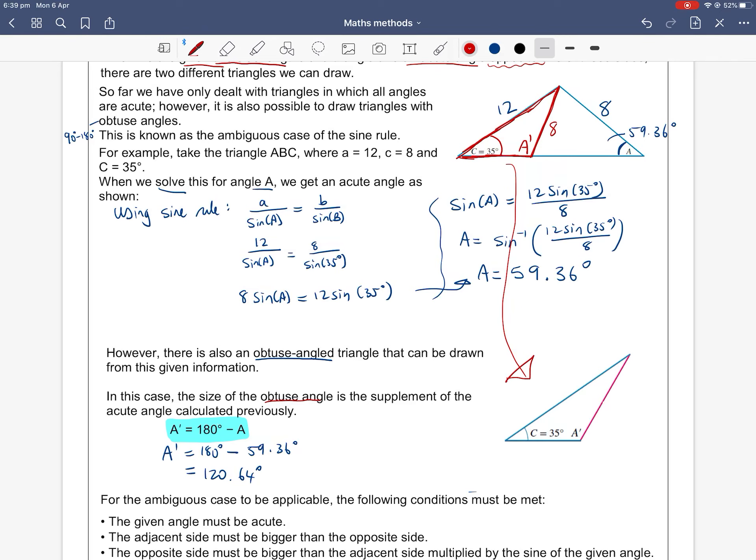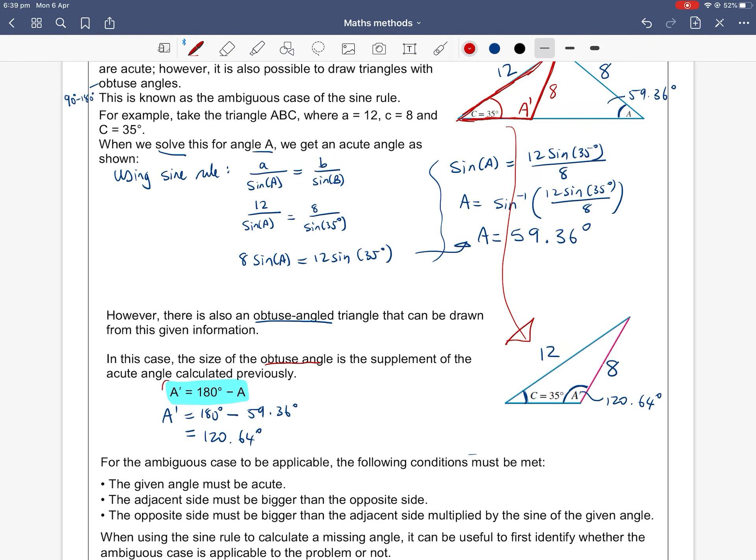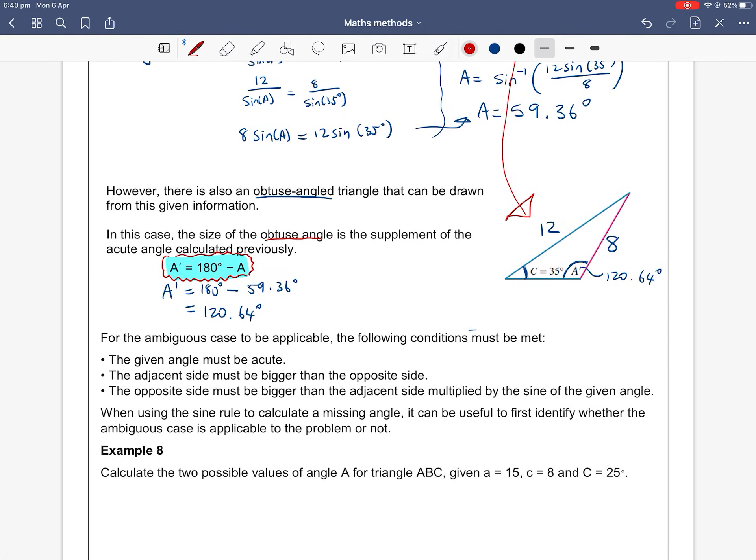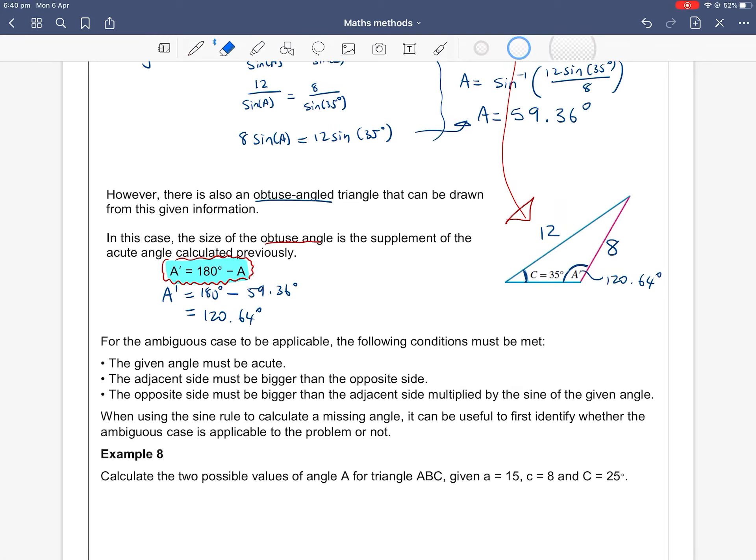So just constructing this second possible case where I'm still having a side length of 12 and I'm still having a side length of 8 and I'm still having that C angle of 35 degrees. But now I have a second case of the A angle which is obtuse, so it's more than 90 degrees, so it's 120.64 degrees. So you've got to always check for the ambiguous case, is it possible to have the obtuse case of 180 degrees minus the acute angle? So if we use a calculator to work out sine inverse, we always do get that acute angle. So when do we check or when do we know we have an ambiguous case to look for?